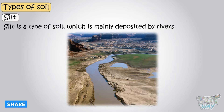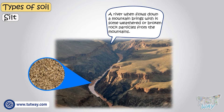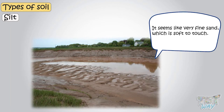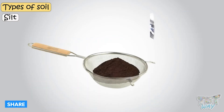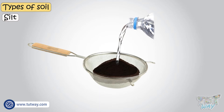Let's learn more about it. A river, when it flows down a mountain, brings with it some weathered or broken rock particles from the mountains. When the river reaches lower areas, it deposits those fine particles on the banks of the river and riverbeds. It seems like very fine sand, which is soft to touch, and this deposited material is called silt. Put some silt in a strainer and pour water on it. Water will drain through the silt slowly, as compared to sand. So silt holds some water, and water drains through silt more slowly than through sand.